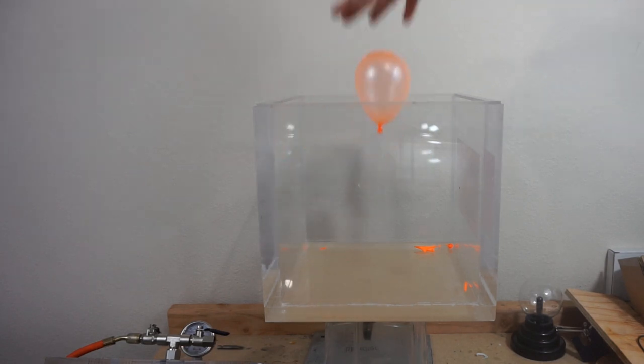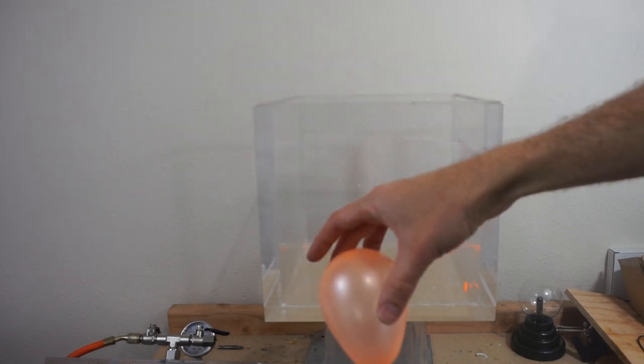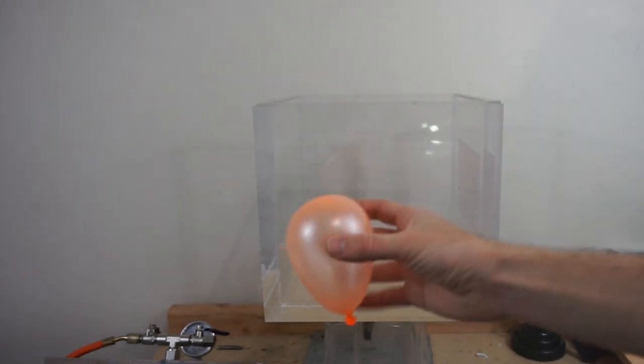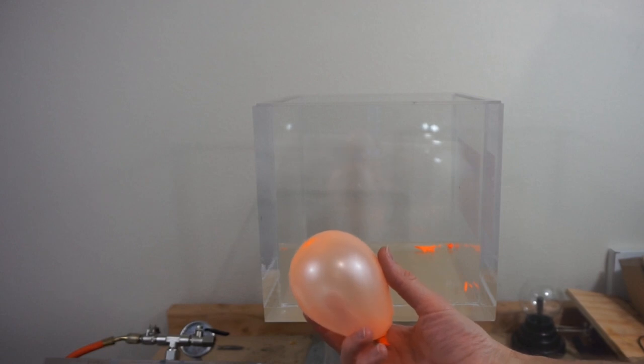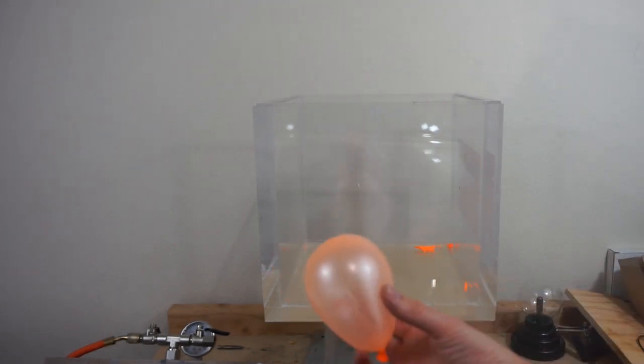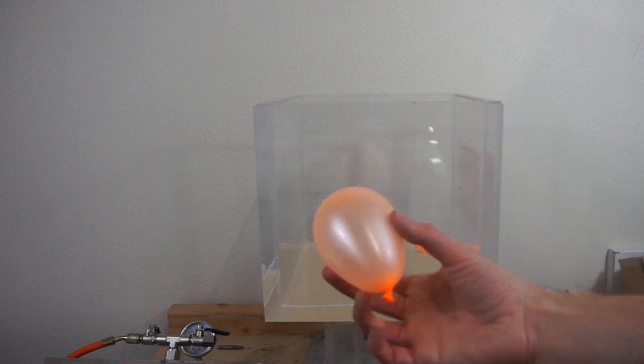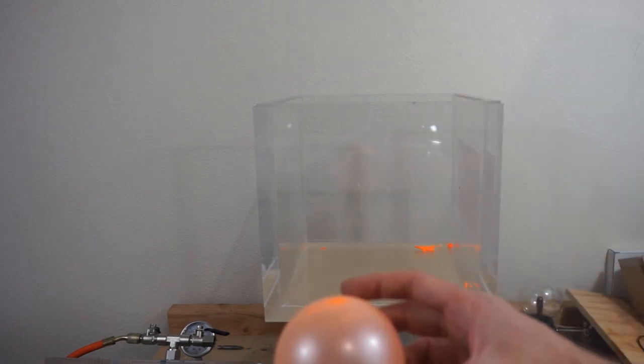But if I get it out of the chamber, it floats up. See? So that's why it didn't float as soon as I let the air back in. It looks like it was stuck to the bottom of the chamber. I thought it had lost some helium and that's why it fell. But it looks like it's still buoyant enough to float.